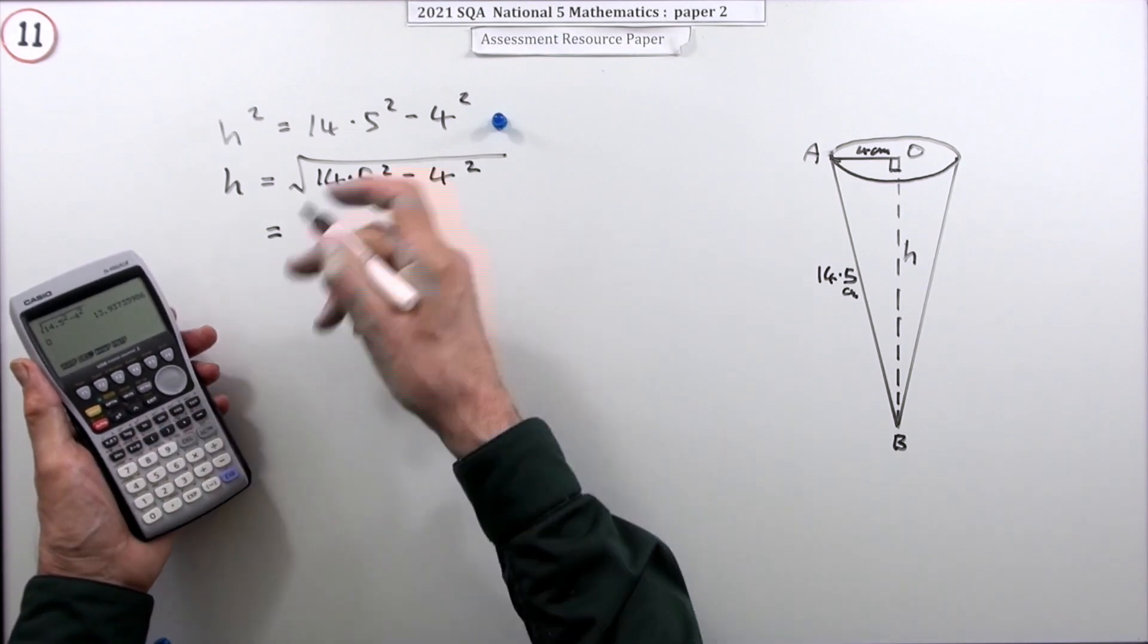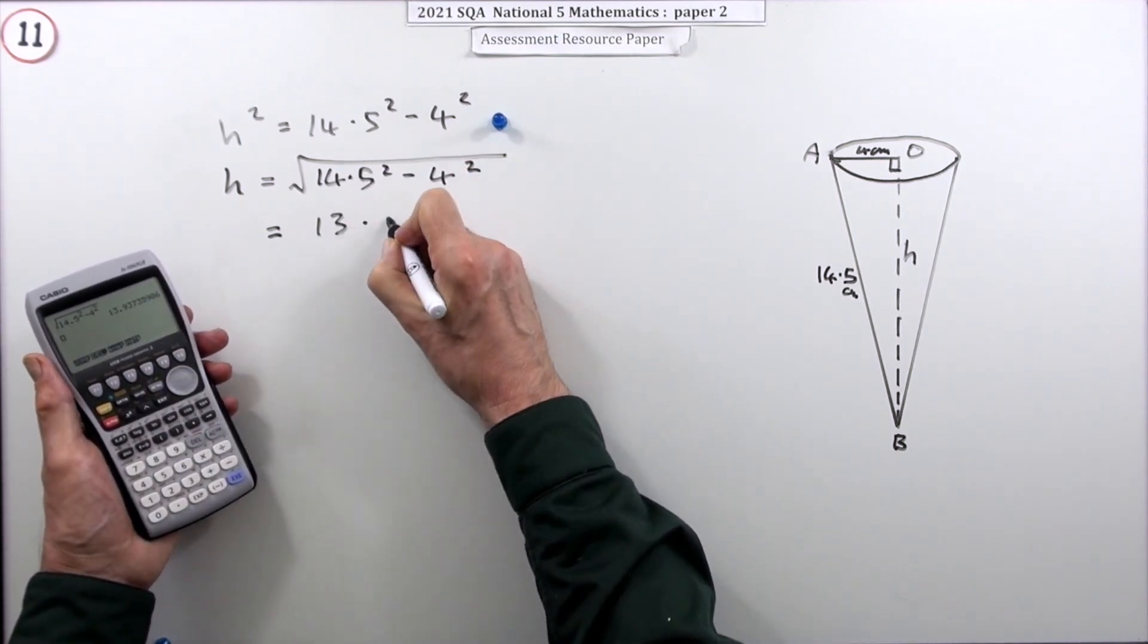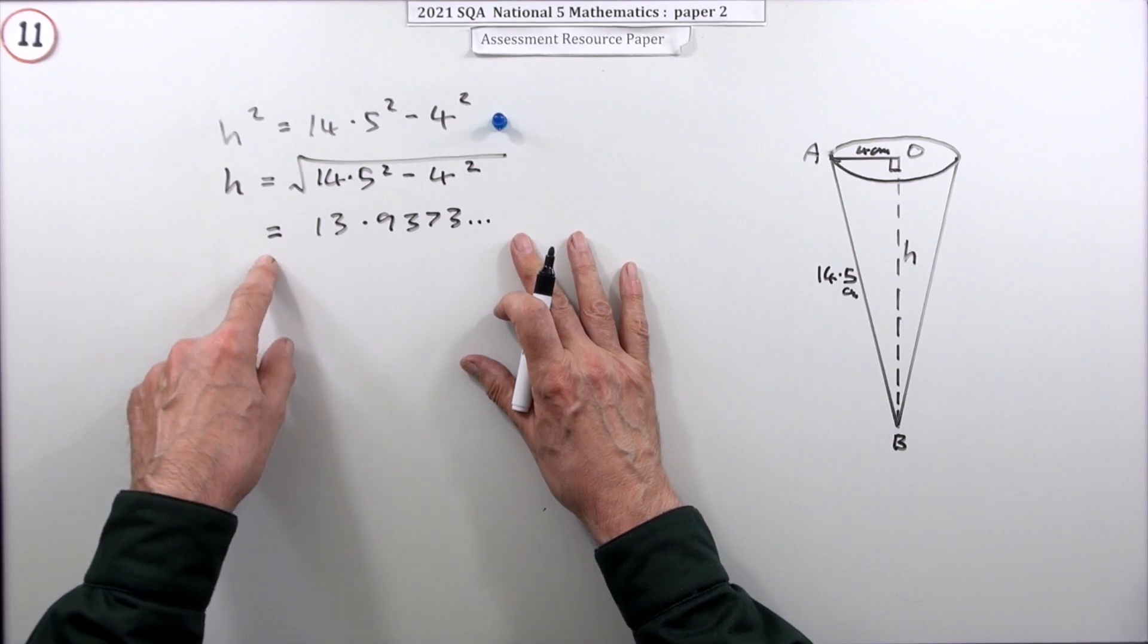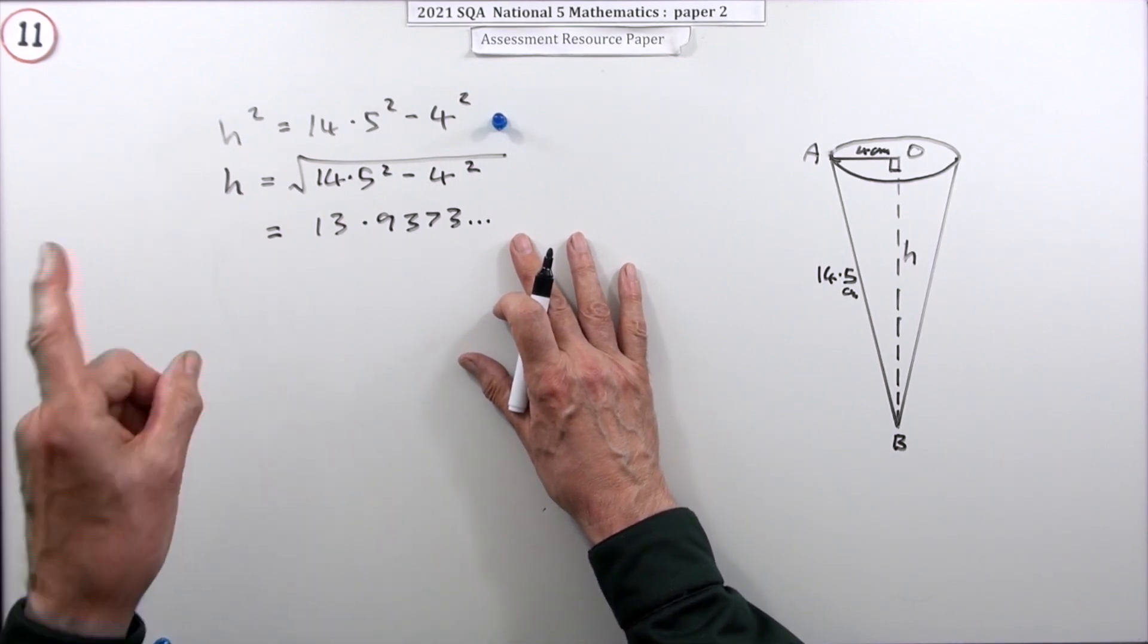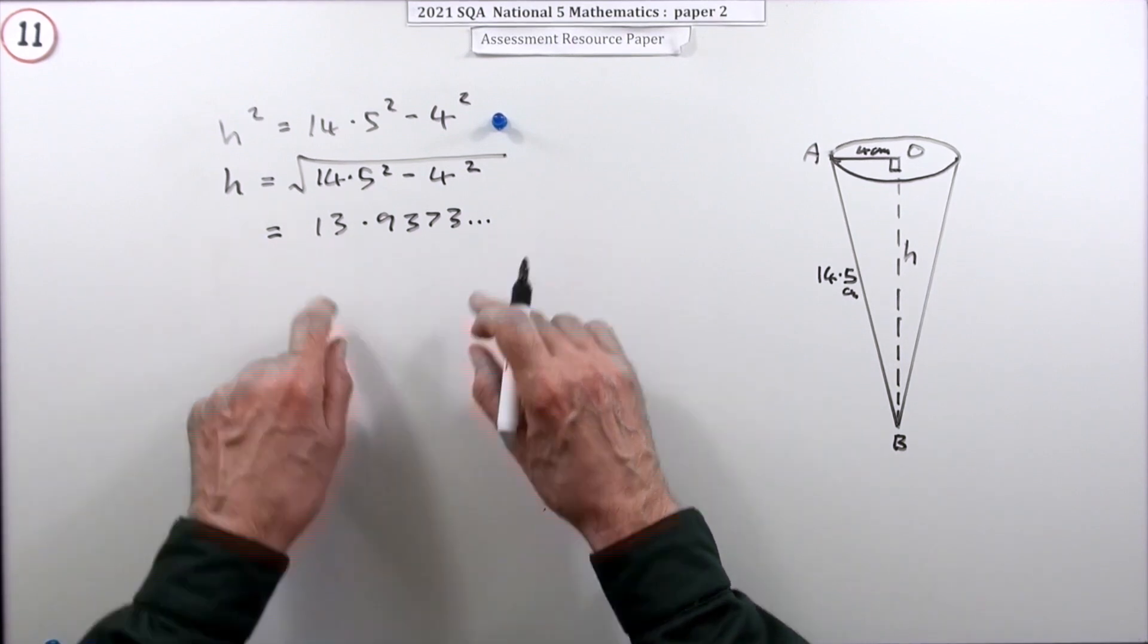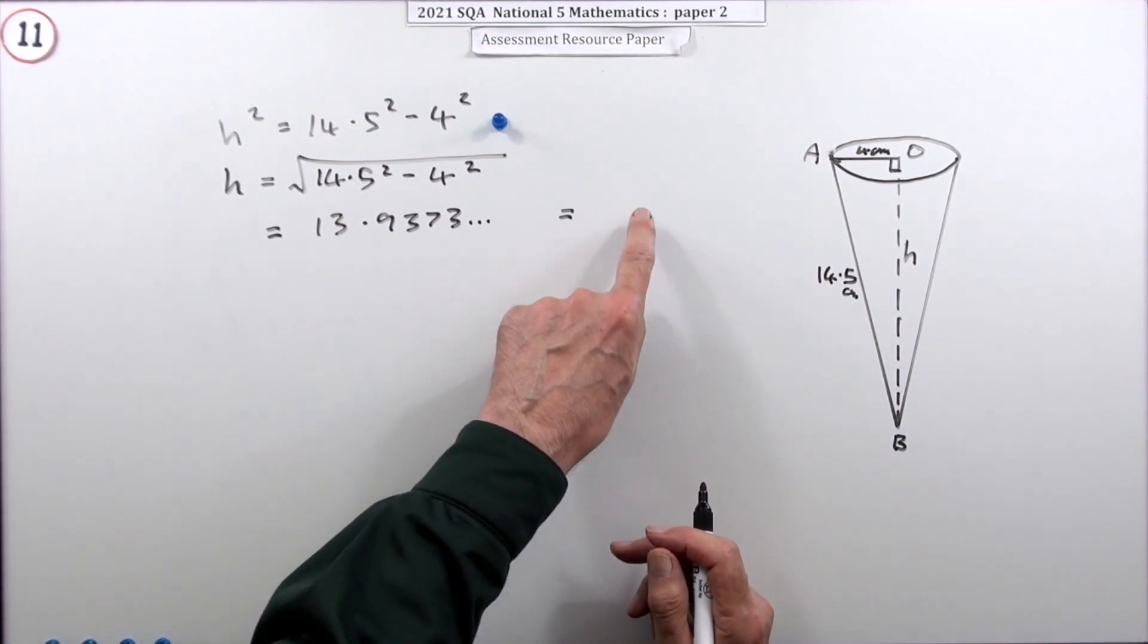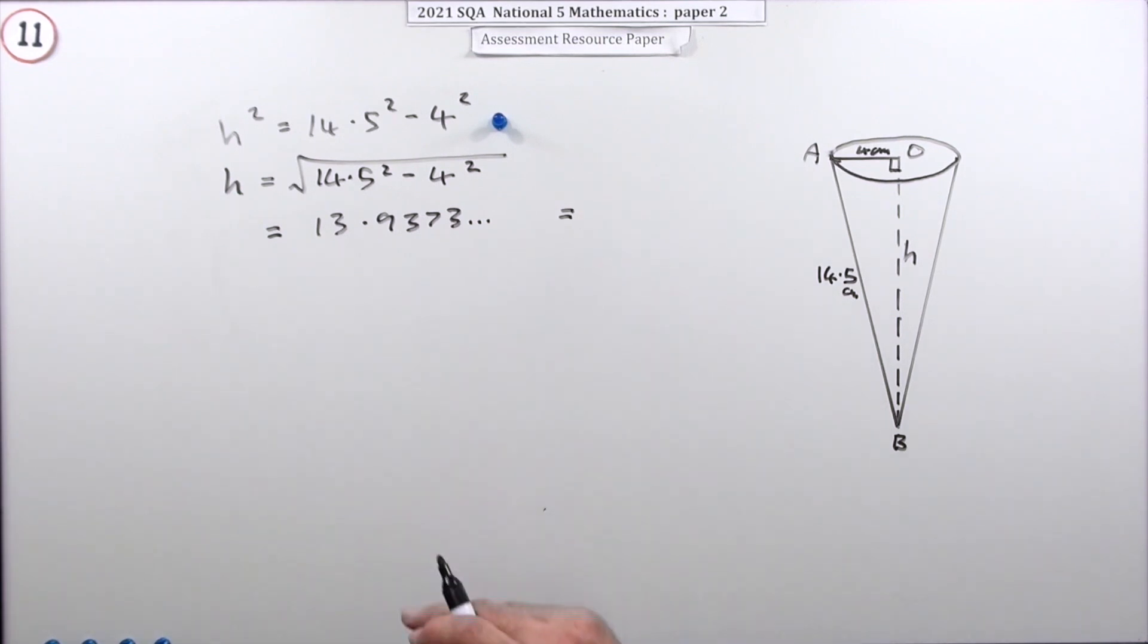Putting that into your calculator gives you 13.9373 and so on. Now the next time I'm going to use that h is going to be the final answer, so I'm not going to press equals again until I've incorporated this. If you didn't want to, then what you could do instead would be round this off, but if you're going to round it off, make sure you round it off to more figures than you need in your answer.